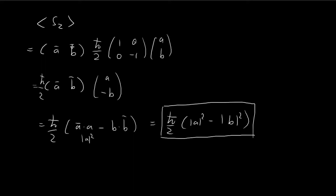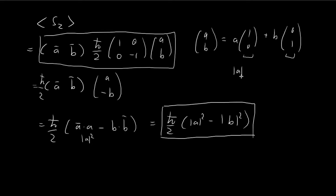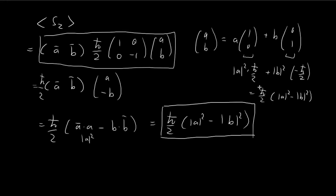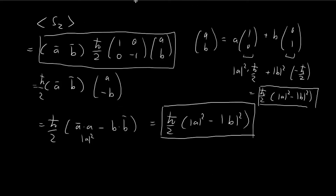Another easy way to obtain this answer is to treat the spinner AB directly, recognizing that (1,0) is the spin-up eigenvector for Sz and (0,1) is the spin-down eigenvector. There is a probability of |A|² of getting spin-up and |B|² of getting spin-down, so the expected value is naturally ℏ/2·(|A|² − |B|²). You can use this eigenvector method for Sx and Sy as well, but you'd need to find their respective eigenvectors.